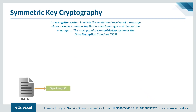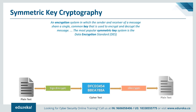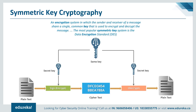Symmetric key algorithms use the same cryptographic keys for both encryption of plain text and decryption of ciphertext. The keys may be identical or there may be a simple transformation between the two. The keys represent a shared secret between two or more parties to maintain a private information link. This requirement that both parties have access to the secret key is one of the main drawbacks of symmetric key encryption compared to asymmetric key encryption. The most popular symmetric key system is the Data Encryption Standard, also known as DES.